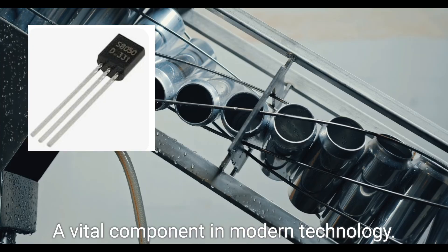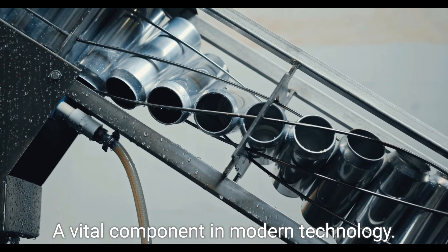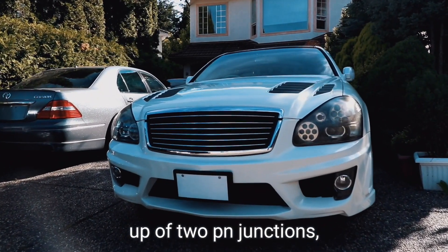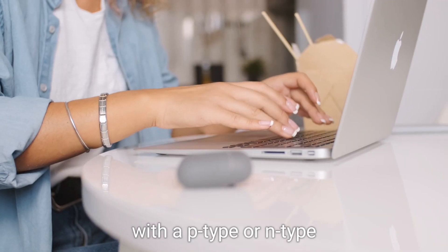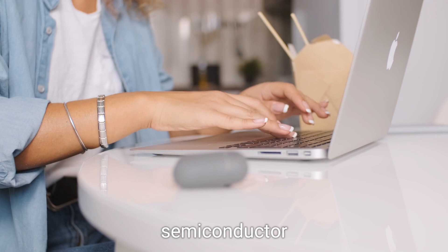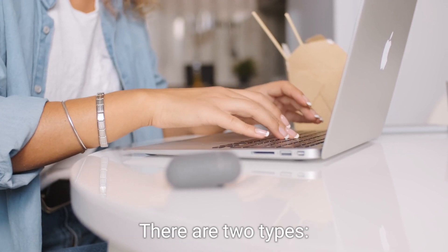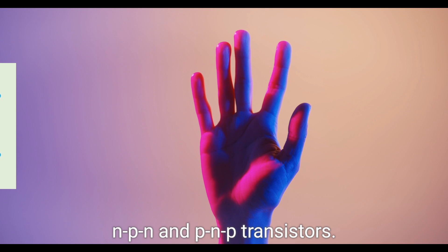Introducing transistors, a vital component in modern technology. Transistors are made up of two PN junctions with a P-type or N-type semiconductor sandwiched in between. There are two types, NPN and PNP transistors.